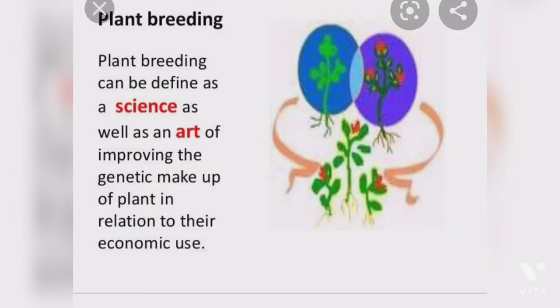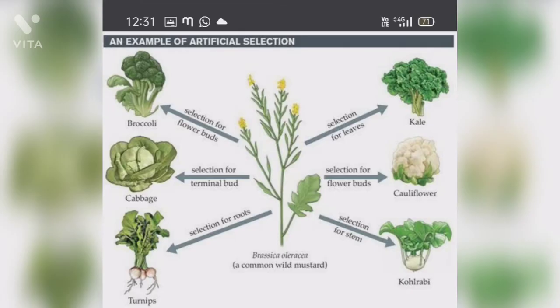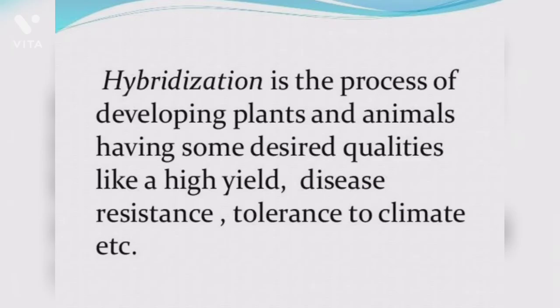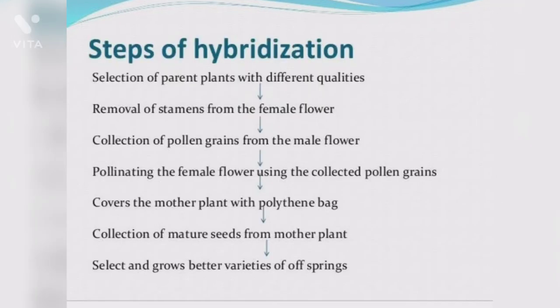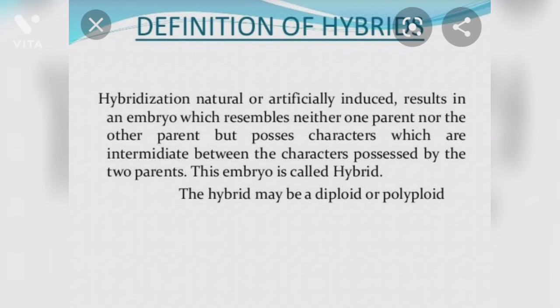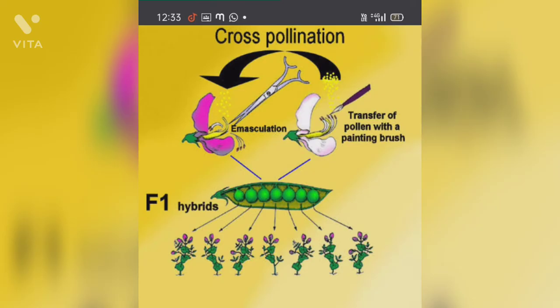Our country has a large and rapidly increasing population. To fulfill the food requirements of such a large population, we need to increase the production of food grains using better crop varieties. Better crop varieties having disease resistance and higher yield can be developed through plant breeding. Use of better crop varieties can increase the crop yield.